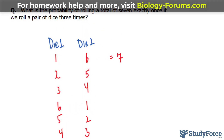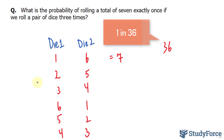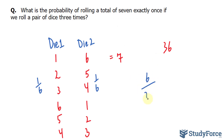The probability of rolling any two specific numbers is one in thirty-six. For example, the probability of rolling any number between one and six is one over six for the first die, and the probability of rolling any number on die two is also one over six. Multiplying these out we get one over thirty-six. So there is a six in thirty-six chance of rolling a seven — that's one over six.